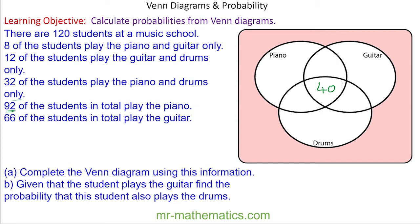Here's our challenge question. There are 120 students at the music school. 8 of the students play piano and guitar only. 12 of the students play guitar and drums only. 32 of the students play piano and drums only. 92 of the students in total play piano. 56 of the students in total play guitar. And 40 of the students play all three. Try to complete the Venn diagram by pausing the video.